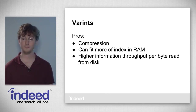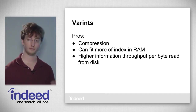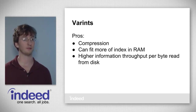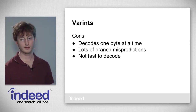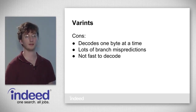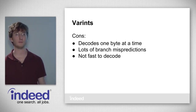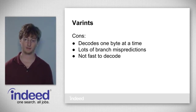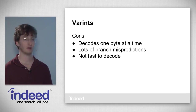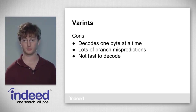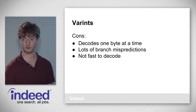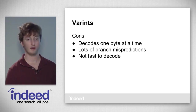Varints are nice because we get good compression, can fit more of our index in RAM, and get higher information throughput per byte read from disk. The downside is that you have to decode one byte at a time, which requires one branch per byte — a highly unpredictable branch. Branch mispredictions are one of the slowest things you can do on a modern processor, so varints are generally not all that fast to decode.